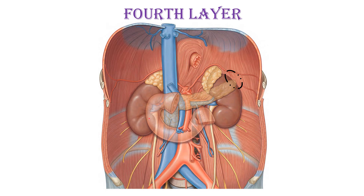On the right side, the second part of the duodenum lies directly in front of the right kidney. So, the contents of the fourth layer are the duodenum with the pancreas and the spleen.